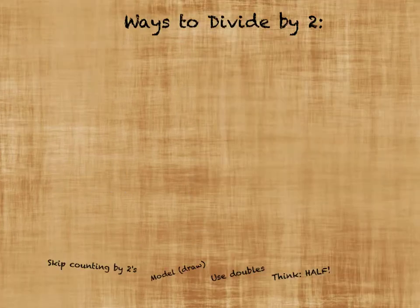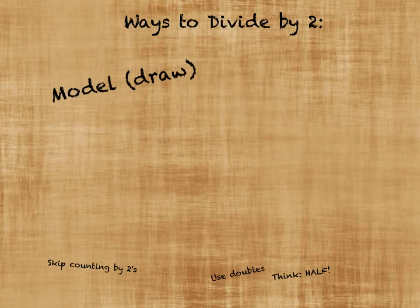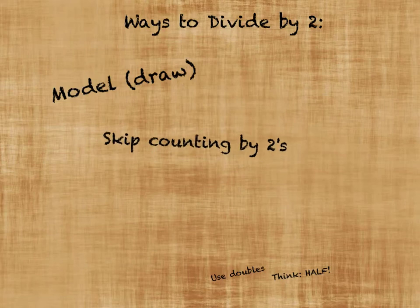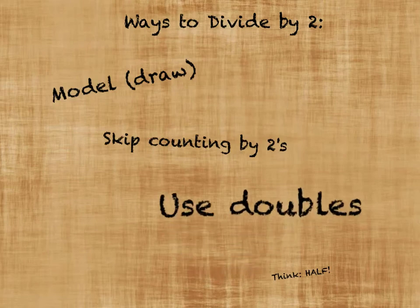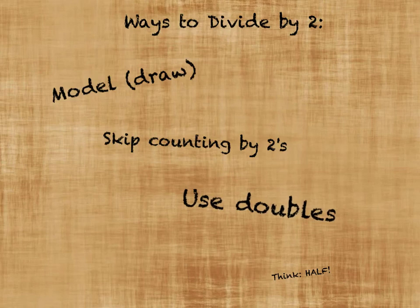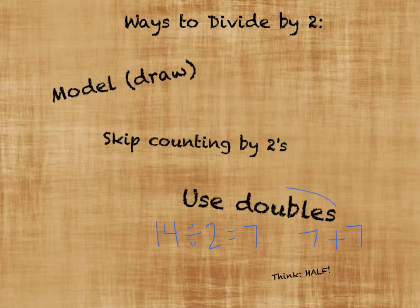Let's look at different ways we can divide by two. First, model or draw — you can draw the number of groups or the number in each group, as we did with the hummingbird problems. You can also skip count by twos: two, four, six, eight, ten — I counted by two five times to get to ten. You can also use the concept of doubles: fourteen divided by two equals seven, because that's just two groups of seven.